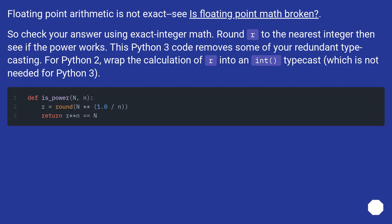This Python 3 code removes some of your redundant typecasting. For Python 2, wrap the calculation of r into an int typecast, which is not needed for Python 3.